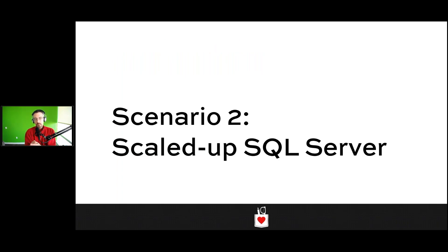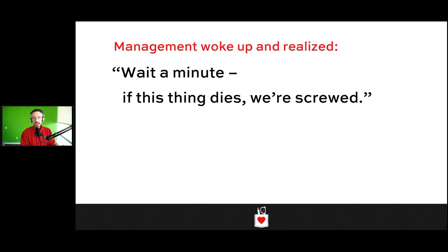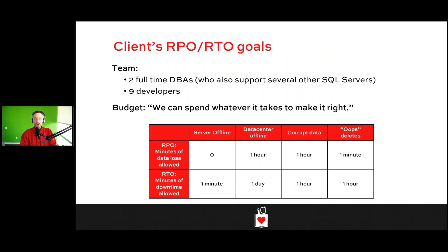In scenario two, we have a scaled-up SQL Server. This team built a big, ginormous monster of a server and people are pretty happy with performance, but one day management woke up and said, 'If this SQL Server goes bump in the night, we have a problem — we'd really rather not lose data.' This crew has two full-time DBAs supporting about 20 different SQL servers altogether. The company has nine developers all focused on building code that runs against this SQL Server.